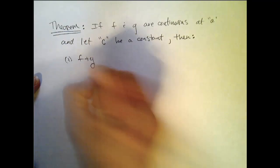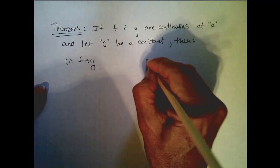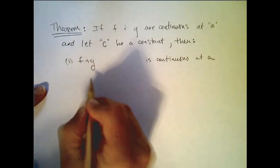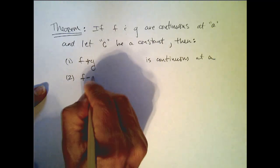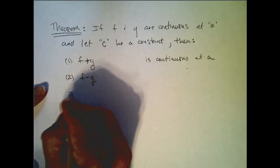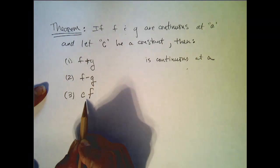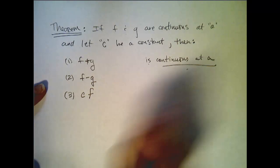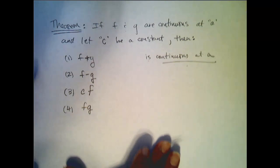f plus g is continuous at a — so the sum of two continuous functions is continuous. The difference of two continuous functions is continuous. If I take a constant times a continuous function at a, then that constant times the function is also continuous at a. The product of continuous functions is continuous.